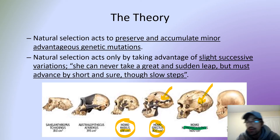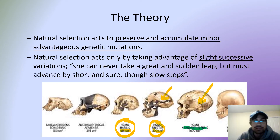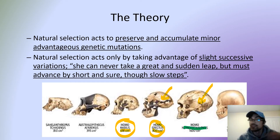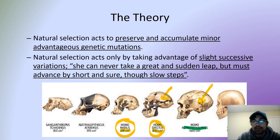Once a new species came about, they would have cohabited the planet in the same area, but because the newer species was better adapted to its surroundings it would have helped it survive. Survival here means living long enough to reproduce and pass on your genetics to a new generation. Because of the accumulated advantages between Homo erectus and Homo habilis, the former would have had an easier time surviving and competing for resources.